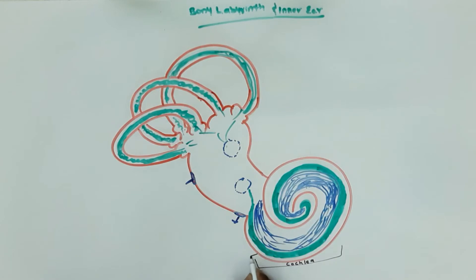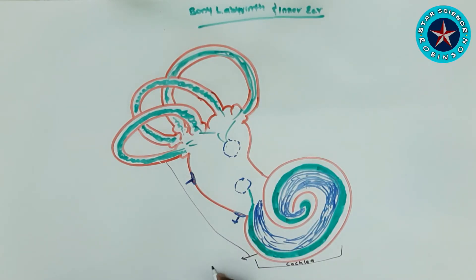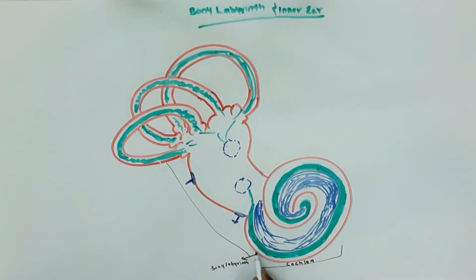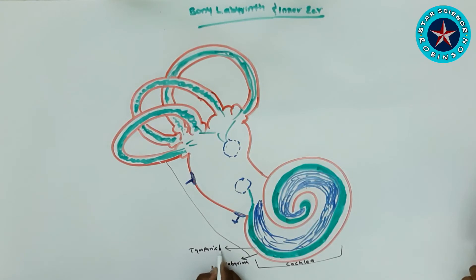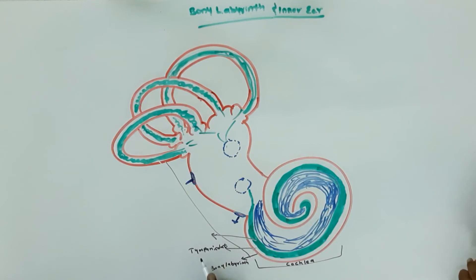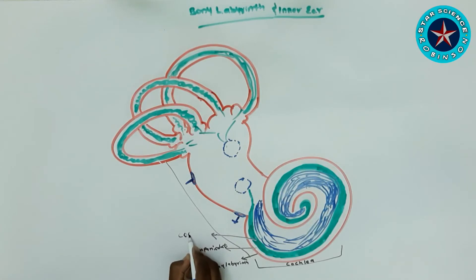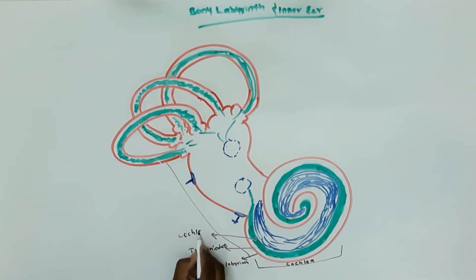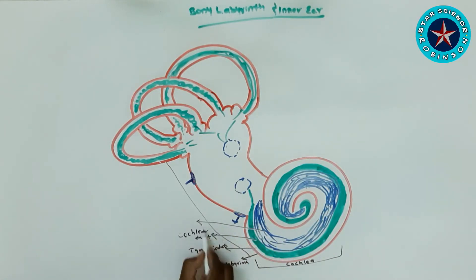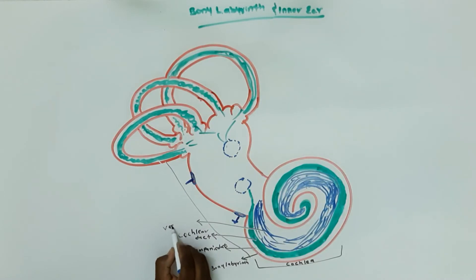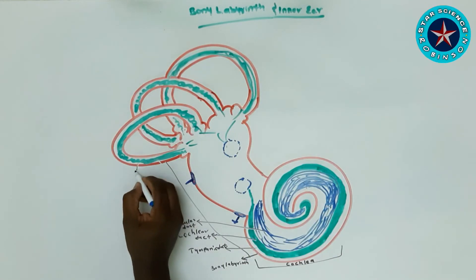In our diagram, after the cochlea, we can see the bony labyrinth. The outer part of the cochlea and the semicircular canal are all made up of bony labyrinth. The inner part of the cochlea contains the scala tympani at the bottom, scala media or cochlear duct at the center, and scala vestibuli above. The scala vestibuli and scala tympani are made up of bony labyrinth lined with periosteum and contain perilymph.